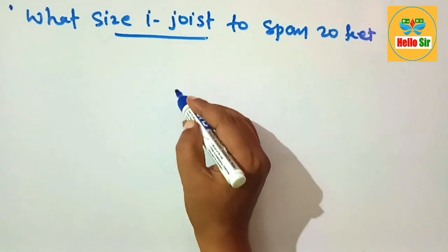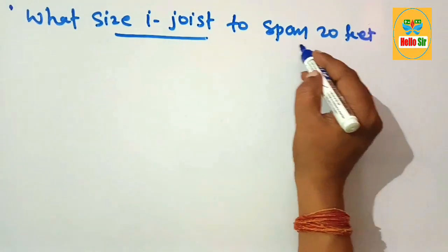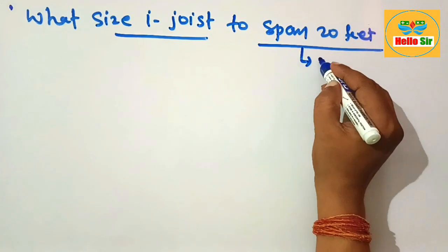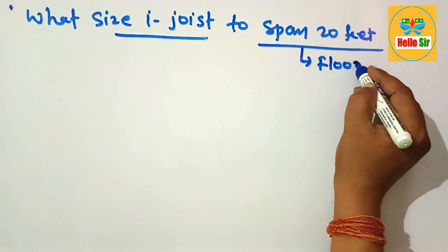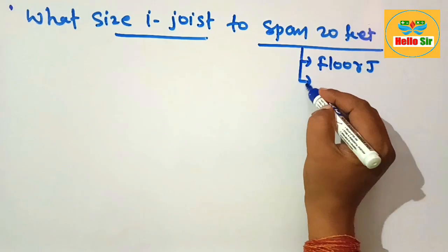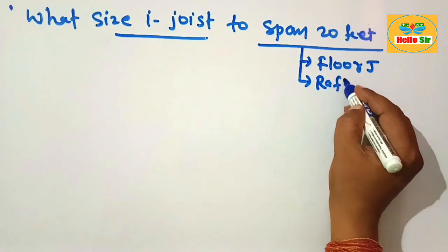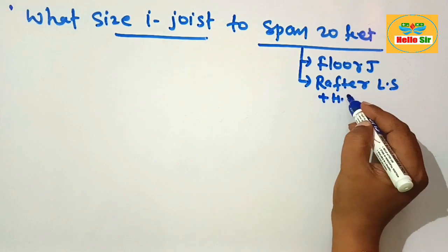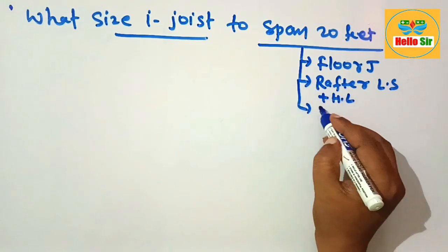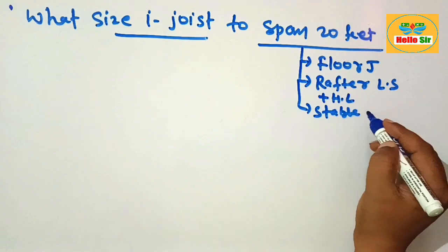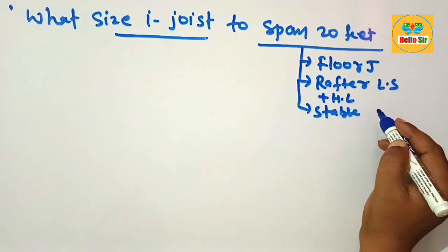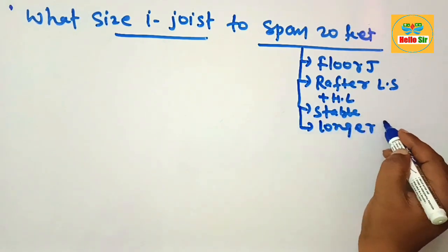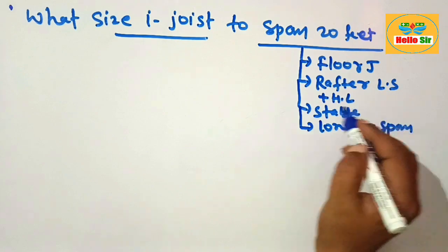You have to determine the size of I-joist required to span 20 feet. The I-joist is used as a floor joist and can also be used as a rafter for longer spans and heavy load conditions. It is a stable product that does not warp, twist, or shrink, and can be used for longer spans.